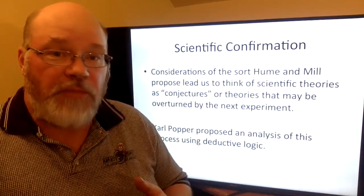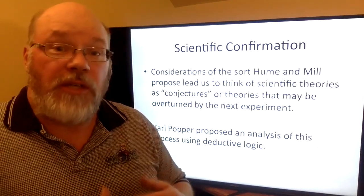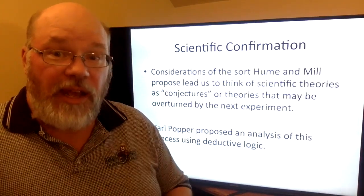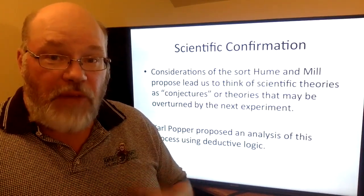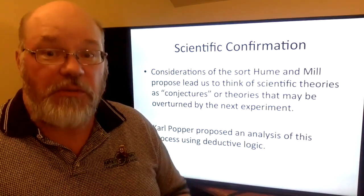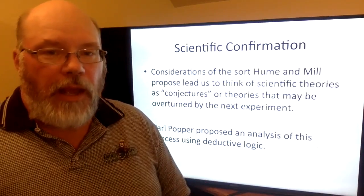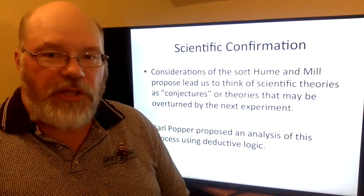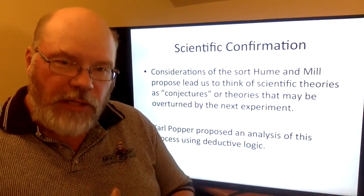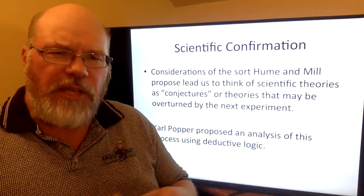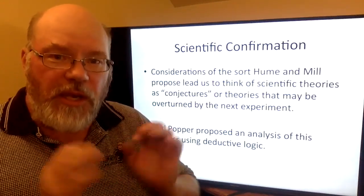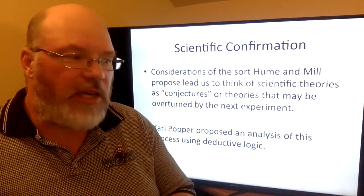We even talk about quite frankly very solid ideas in science — like the theory of gravitational attraction — as a theory, implying it could be overturned by the next experiment. Today we're going to talk about a philosopher named Karl Popper, who thought that the ease or the possibility of things being overturned was maybe an insight that was underappreciated.